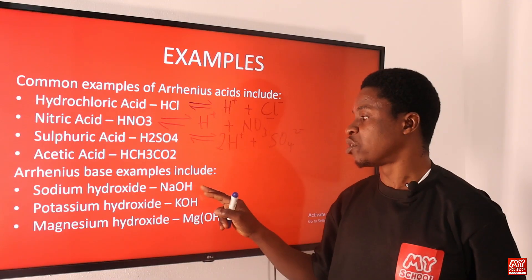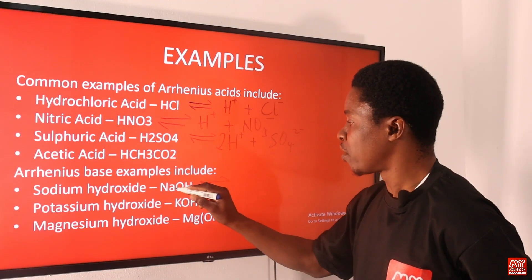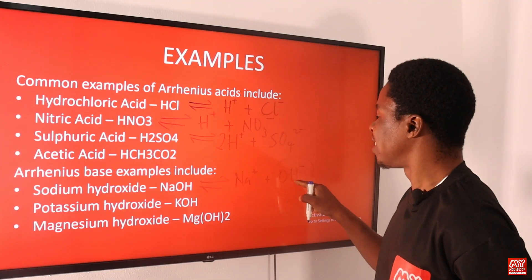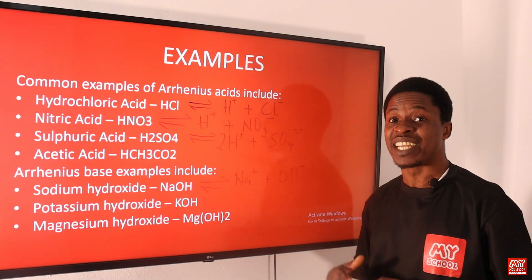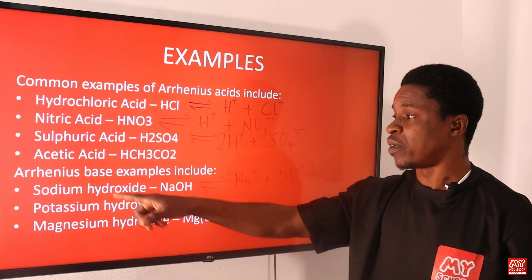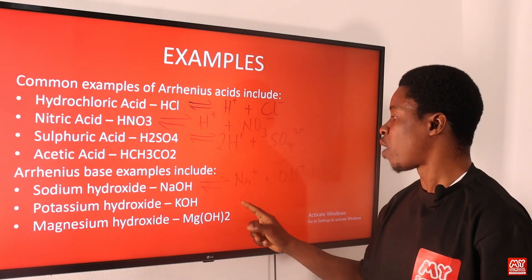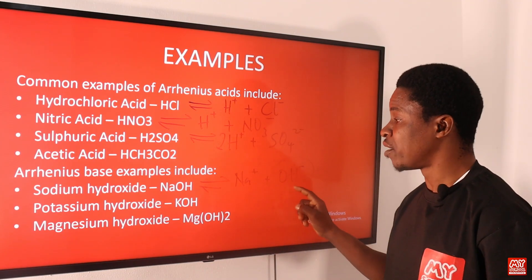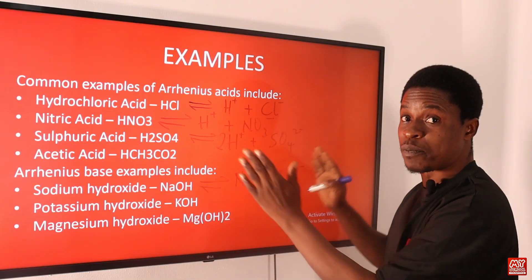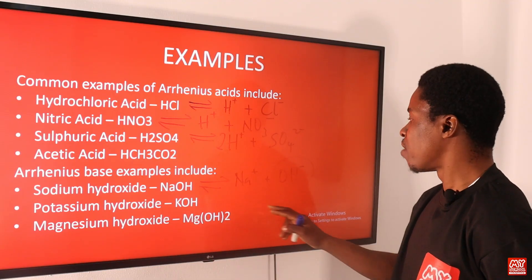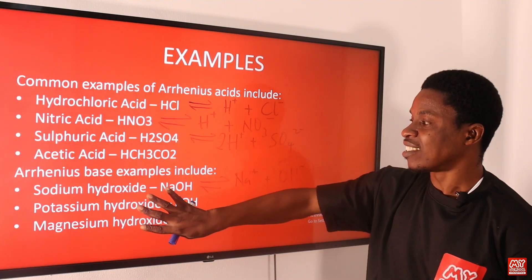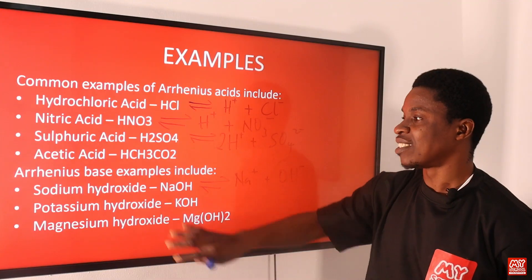Arrhenius base examples include sodium hydroxide (NaOH), which dissociates to give Na⁺ + OH⁻. Potassium hydroxide (KOH) dissociates to give K⁺ + OH⁻. Magnesium hydroxide (Mg(OH)₂) also dissociates to give OH⁻. The hydroxide ion (OH⁻) is what makes these Arrhenius bases, because they dissolve and dissociate in water to produce OH⁻ as their negative ion. These are common examples of Arrhenius acids and Arrhenius bases.